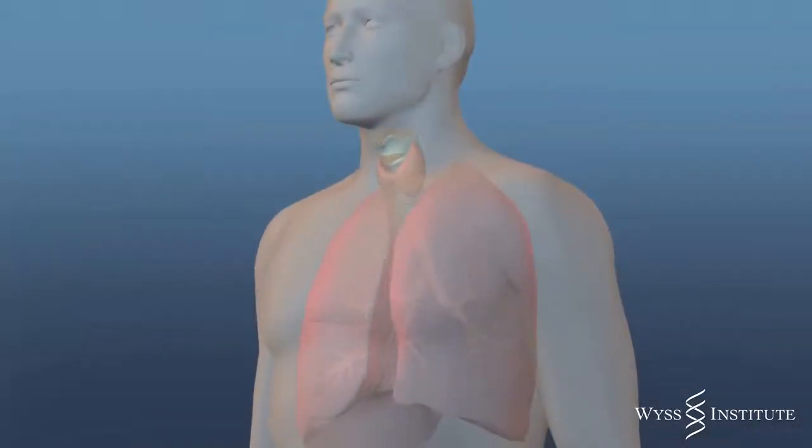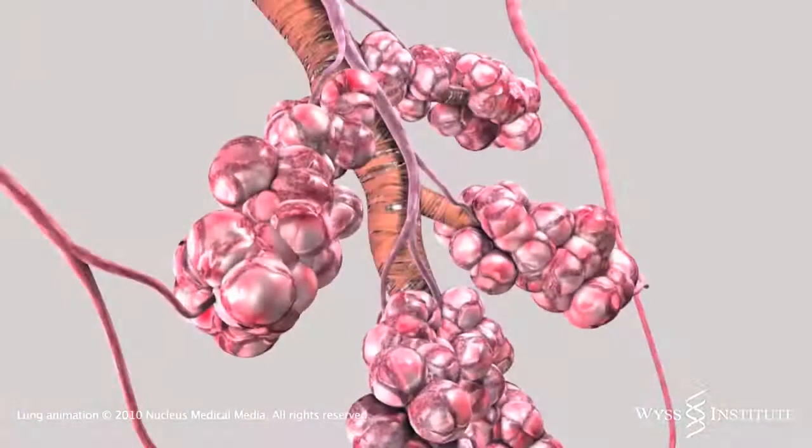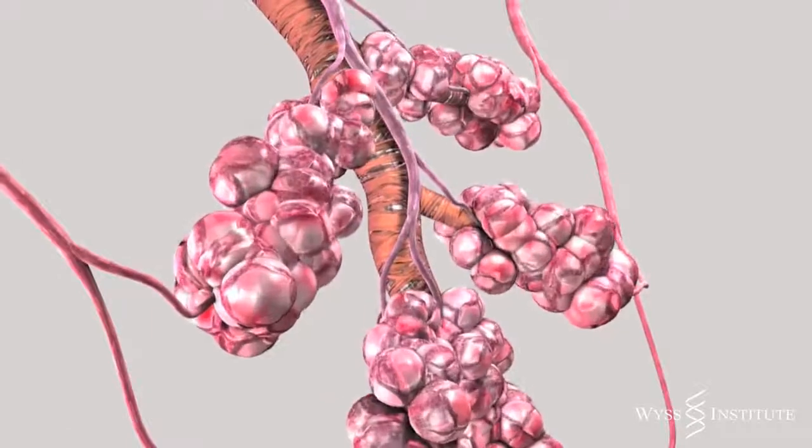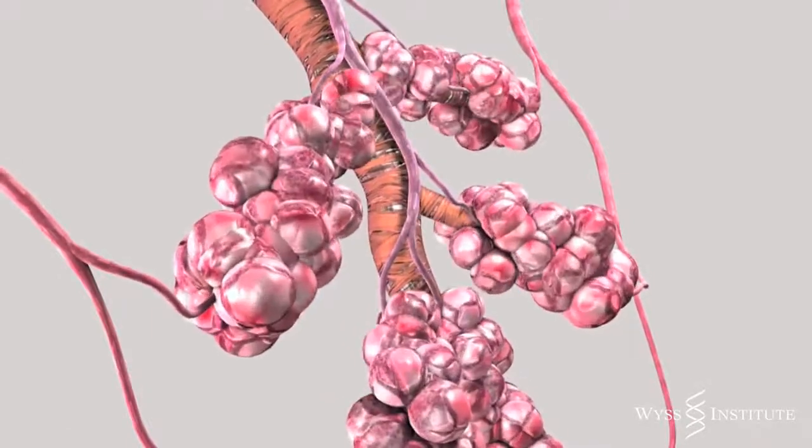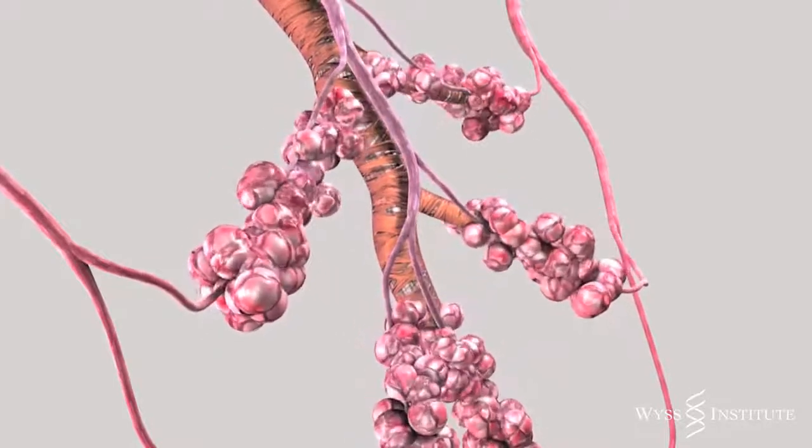With every breath, air enters the lungs, filling and expanding microscopic air sacs. Oxygen is transferred across lung and capillary cells and into the bloodstream. This is also where aerosol drugs are absorbed and where infections and tumors form in the lung.